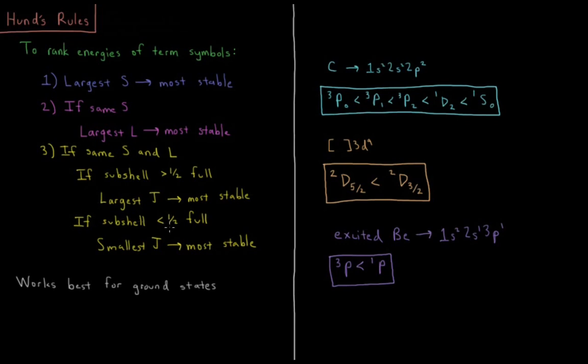Then if the subshell is less than half full, we would do the reverse, where the smallest J would be the most stable. So alternatively, if I did 3D1, 3D1 has the same term symbols as 3D9, but in 3D1, the 3 halves would be more stable than 5 halves for J, because the smallest value of J would be the most stable for less than half full.